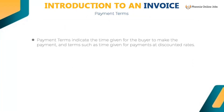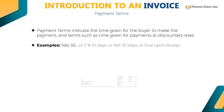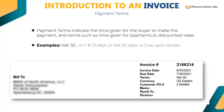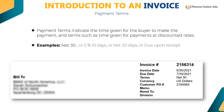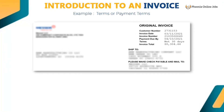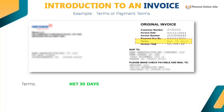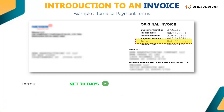Payment terms indicates the time given for the buyer to make payment and terms such as time given for payments at discounted rates. Examples are: net 30, 5% 10 days, net 30 days, or due upon receipt. Key only 'net 30 days' from this example. Do not key the word 'terms.' If 'terms' or 'payment terms' is already populated, then remove those words.